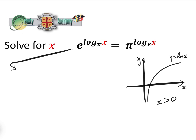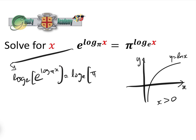So we have log to the base e of e to the power of log_pi(x), equals log to the base e of pi to the power of log_e(x).